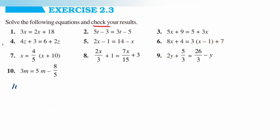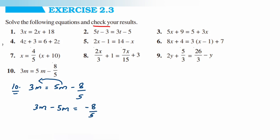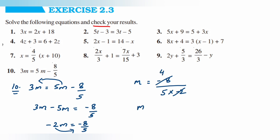The tenth problem is 3m is equal to 5m minus 8 upon 5. Transpose 5m to the left: 3m minus 5m is equal to minus 8 upon 5, giving minus 2m is equal to minus 8 upon 5. Transposing minus 2 gives m is equal to minus 8 upon 5 divided by minus 2. The negatives cancel and we get m is equal to 4 upon 5.